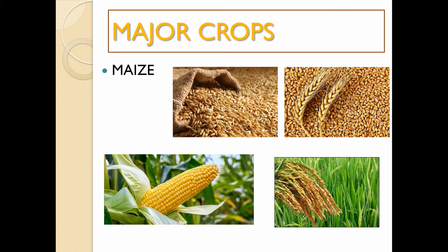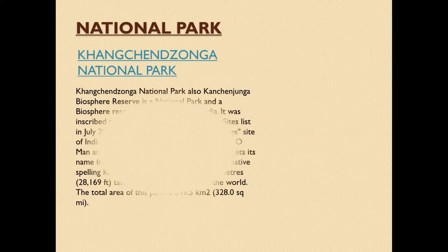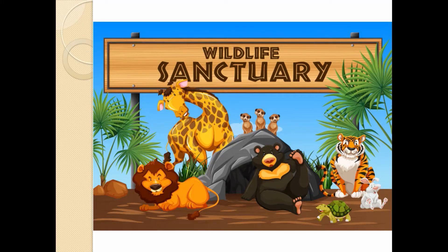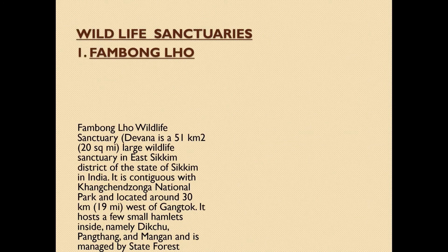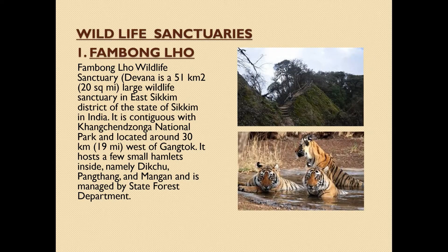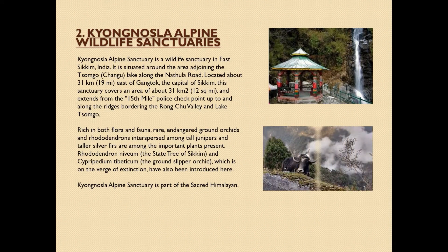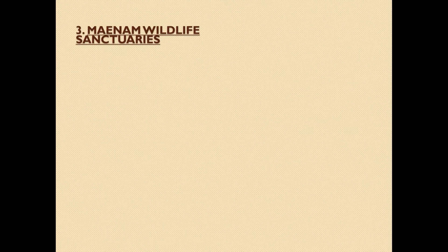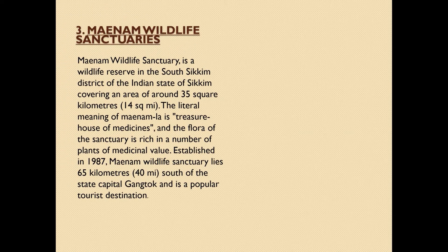Major crops include maize, paddy, wheat, and barley. Next is the national park section, followed by wildlife sanctuaries. The first wildlife sanctuary is Fambong Lo. The second is Kyongnosla Alpine Wildlife Sanctuary. You can also add animations. The third wildlife sanctuary is Menam Wildlife Sanctuary.